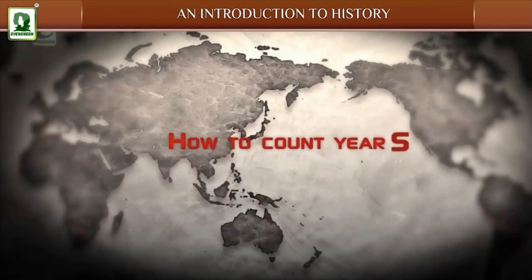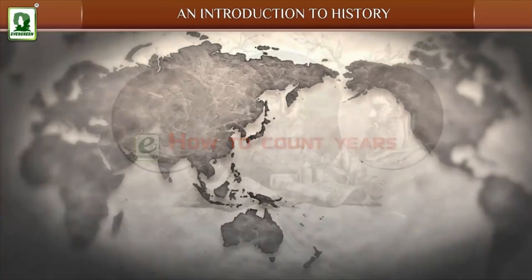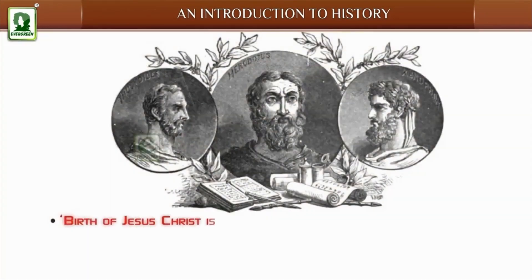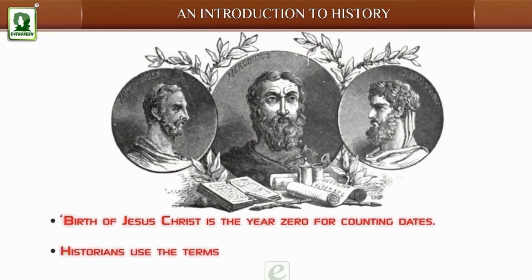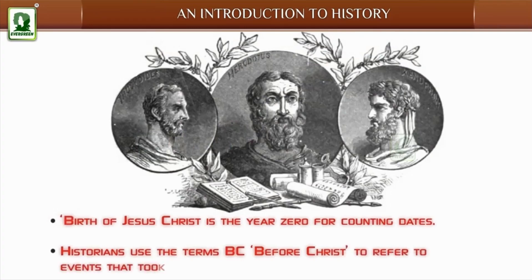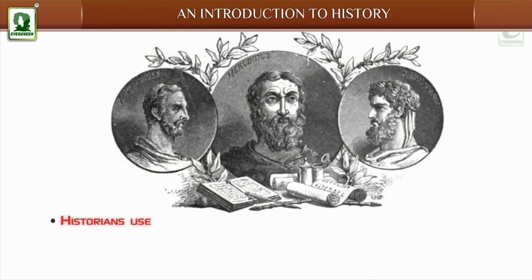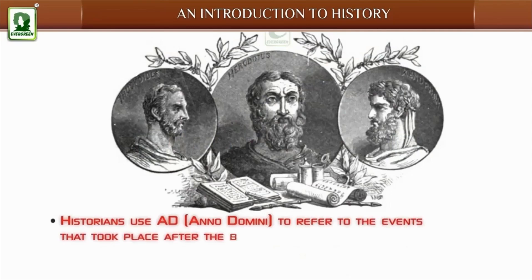How to count years: The birth of Jesus Christ is the year 0 for counting dates. Historians use the term BC, before Christ, to refer to events that took place before the birth of Christ. Historians use AD, Anno Domini, to refer to events that took place after the birth of Christ.